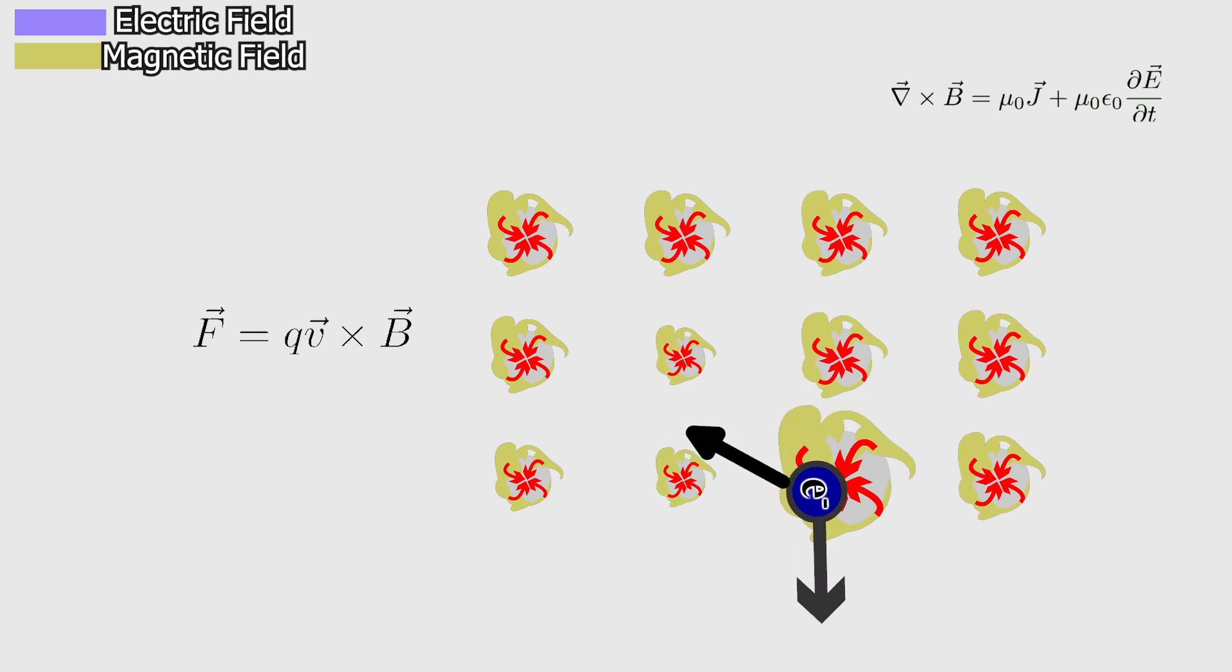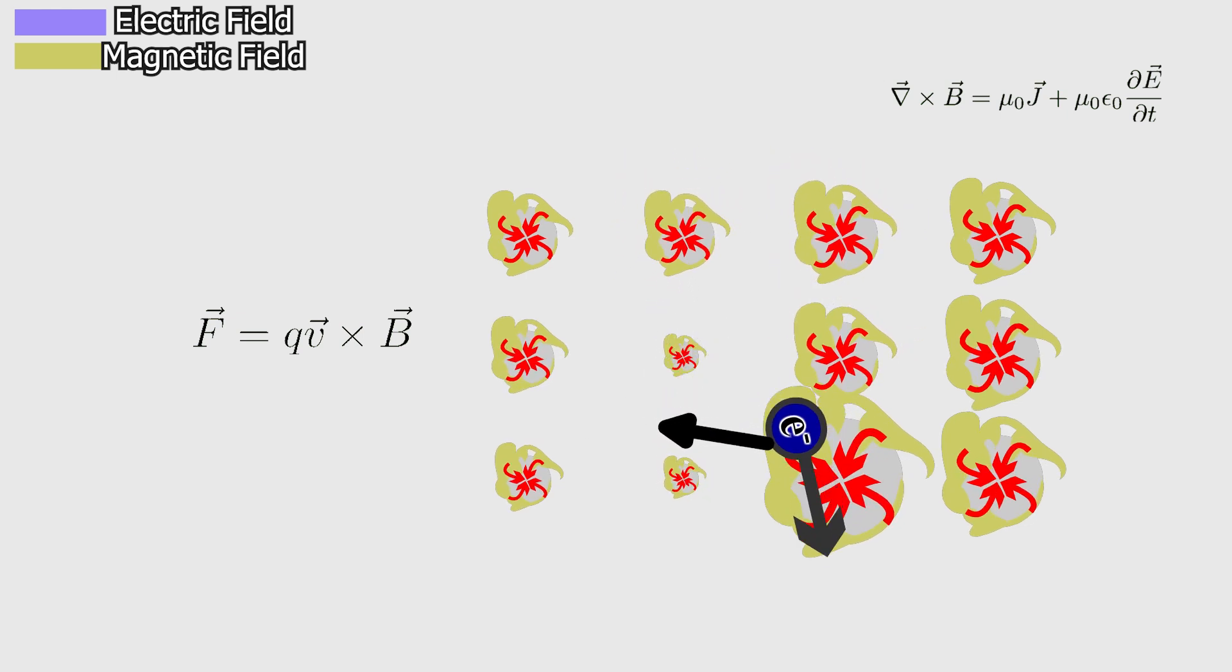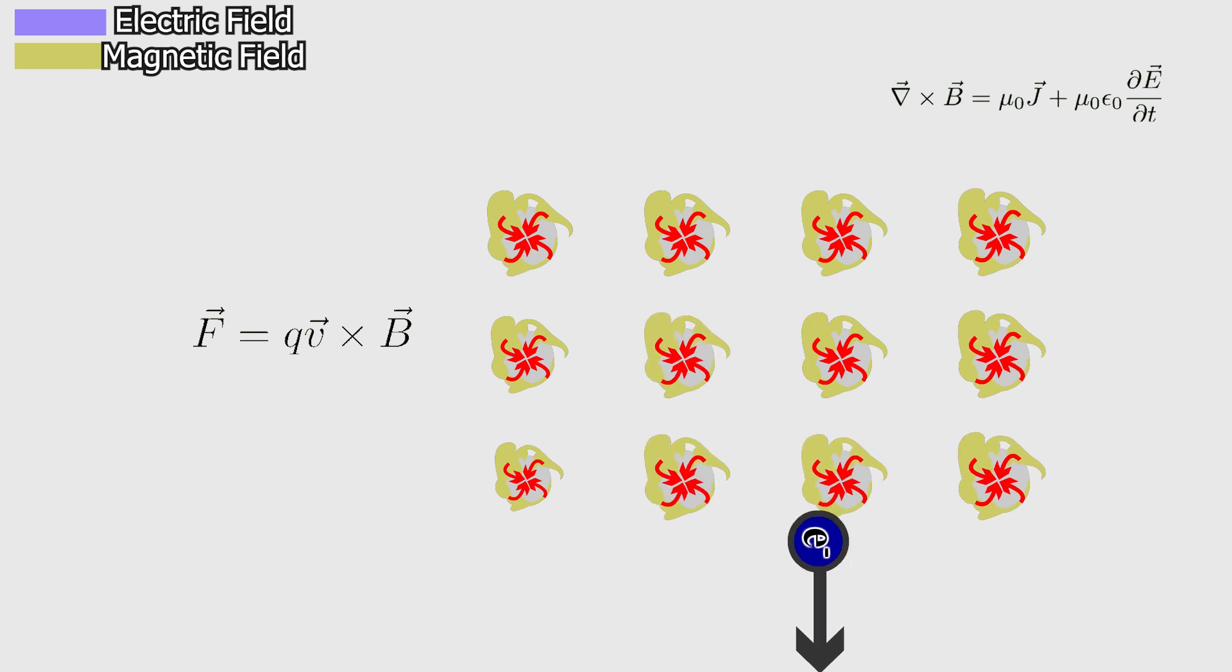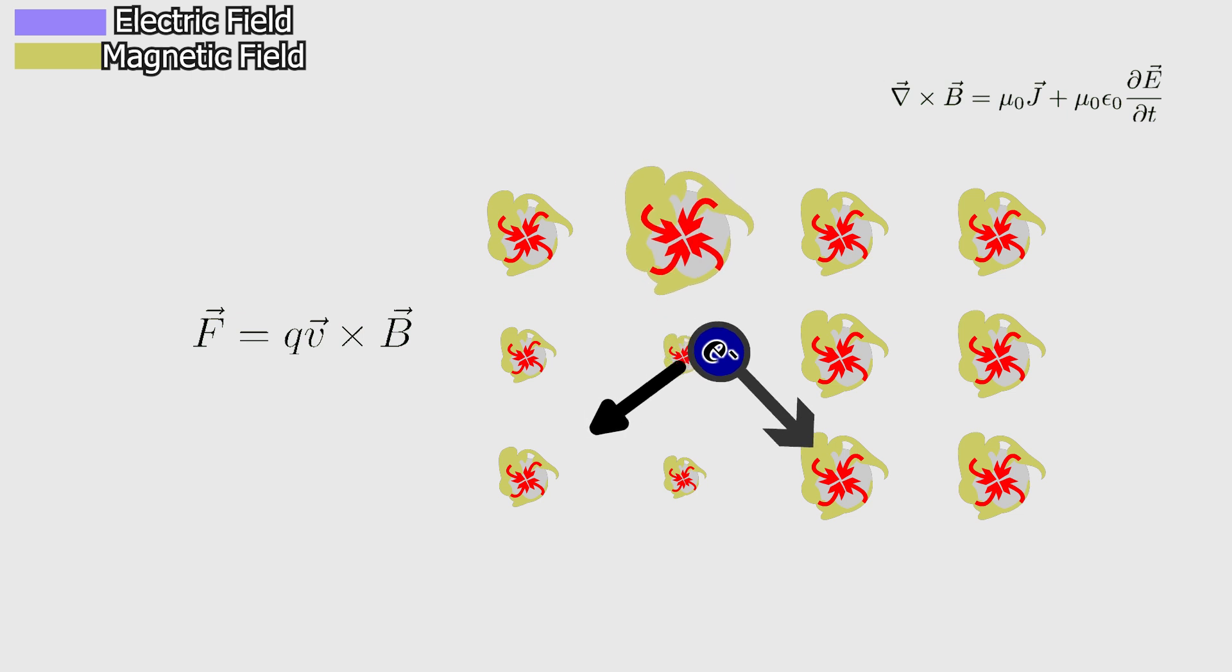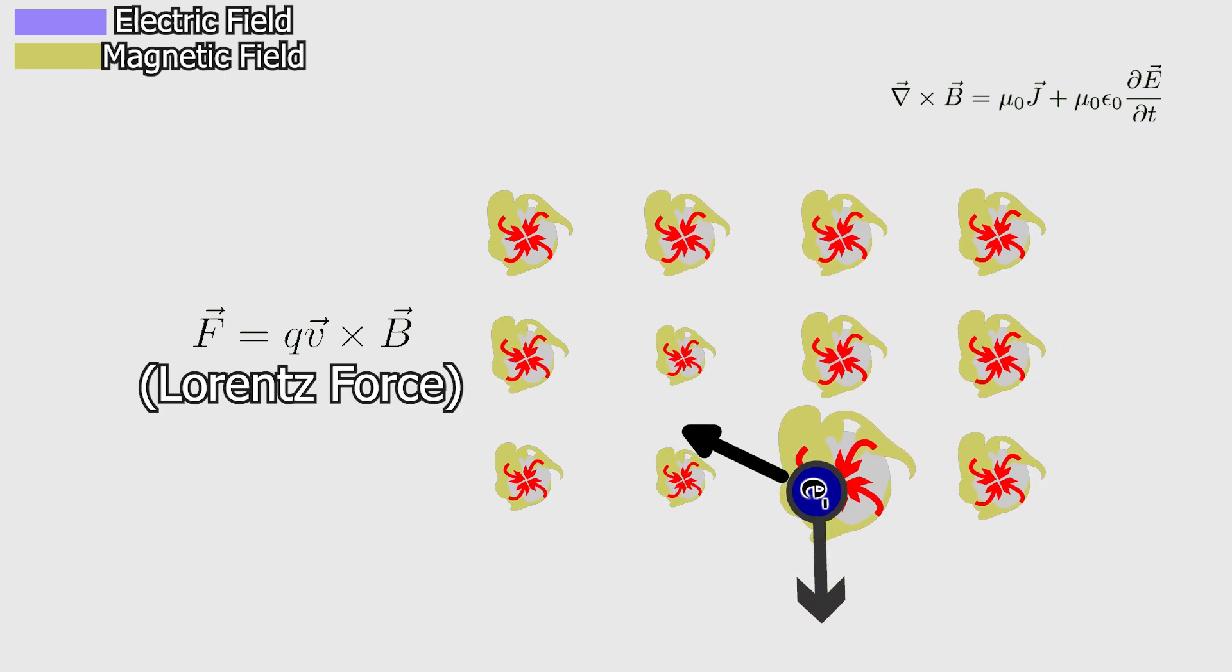However, magnetic fields do not directly reverse the velocity of the particle. Instead, they change its direction, causing it to follow a helical or circular trajectory because the force direction is to the center of minimum energy state and perpendicular to velocity of electron. This force is expressed as the Lorentz force.